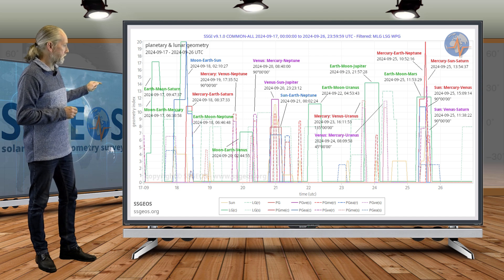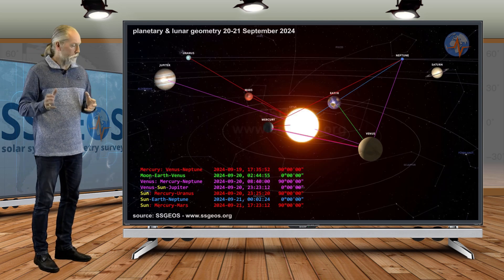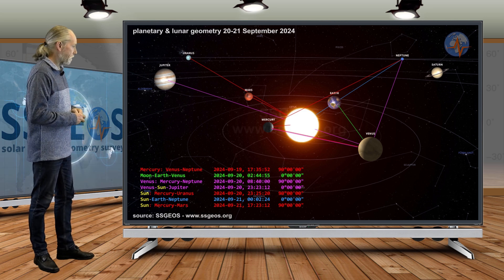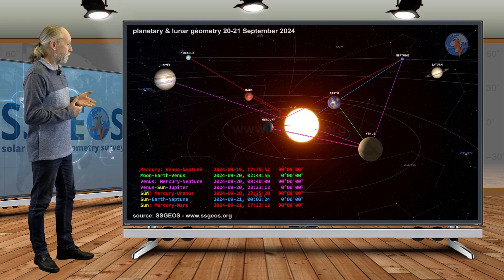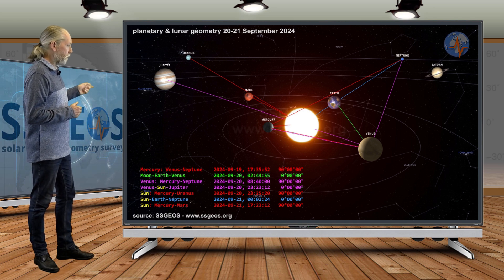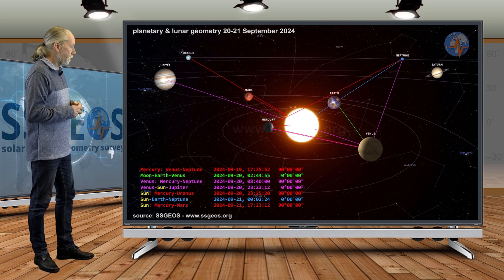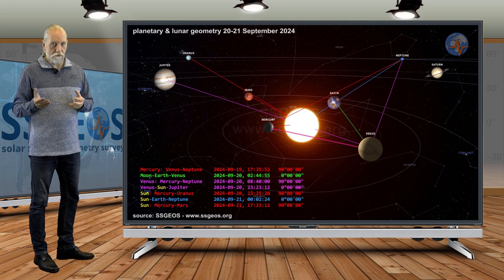If you look at the solar system, there's a lot going on there on the 20th and the 21st. We see Mercury, Venus, Neptune in right-angle geometry, and then Venus, Mercury, Neptune also. So that will be later on the 19th and early on the 20th. There's not much time in between. And in between, the Moon will be in alignment with Venus.